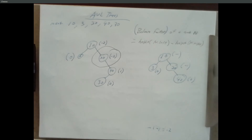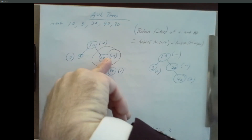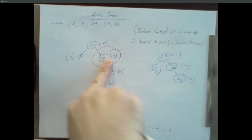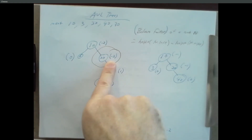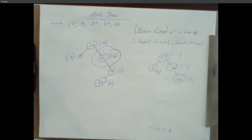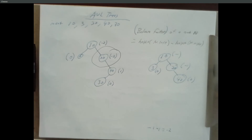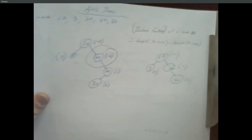So this is our general approach: we insert something, we recalculate balance factors, and when we find something too big or too small, we make an adjustment. These adjustments are called rotations, and we're going to have to make either one or two rotations to restore balance.